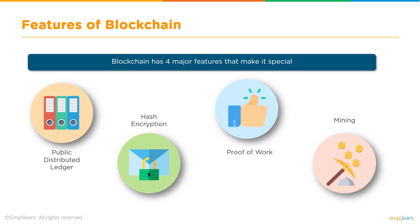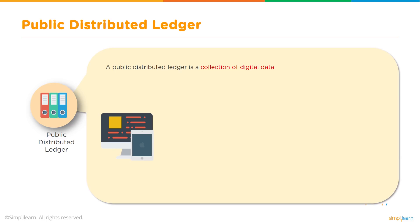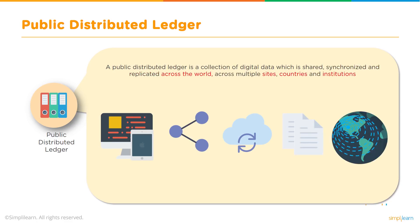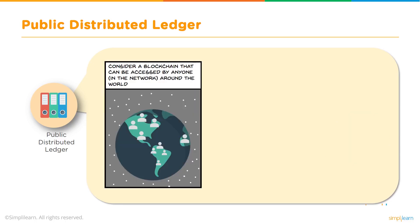What is a public distributed ledger? A public distributed ledger is a collection of digital data which is shared and available to all participants on the network. It is synchronized — everyone has the same copy of data. It is a replicated, shared ledger across the world, across multiple sites, boundaries, countries, and institutions. Consider a blockchain that can be accessed by anyone in the network around the world.